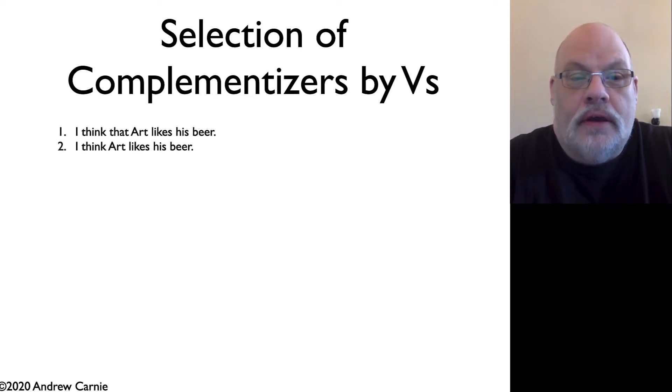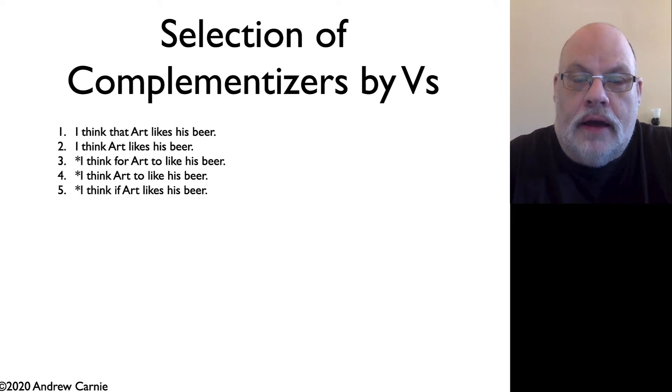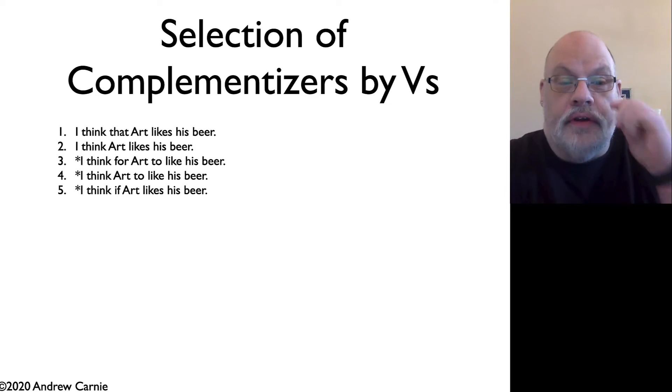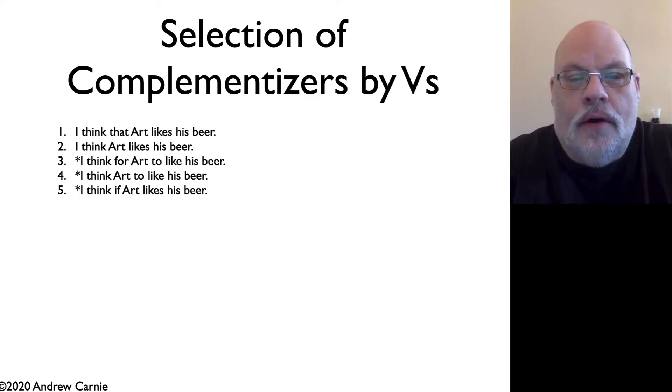Let's start with the verb THINK. The verb THINK can show up with a couple of different kinds of embedded clauses. You can say, I think that Art likes his beer, and I think Art likes his beer. Those are both finite non-questions. If you try to make it a non-finite clause, the sentence becomes ungrammatical. I think for Art to like his beer is terrible. And also, it's the case that THINK doesn't allow embedded questions marked by the complementizers if or whether. So to state this generalization, the verb THINK doesn't allow non-finite clauses, and doesn't allow question clauses.